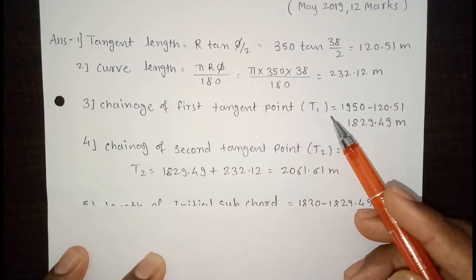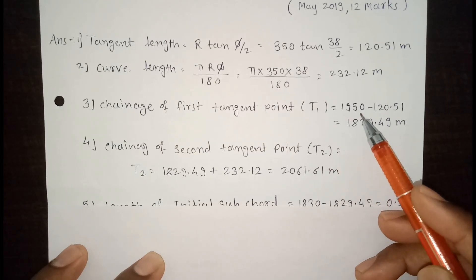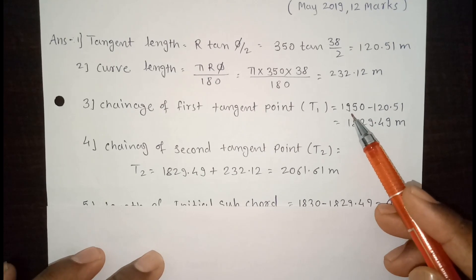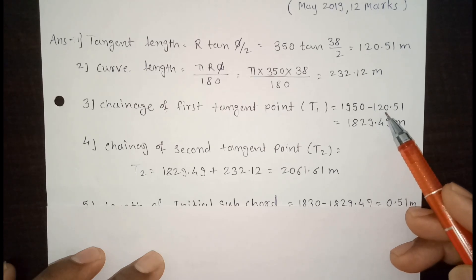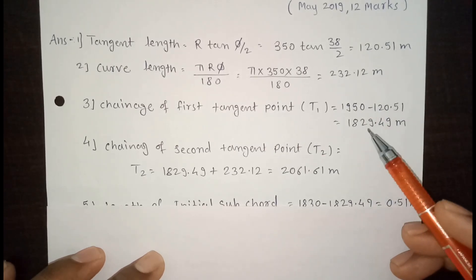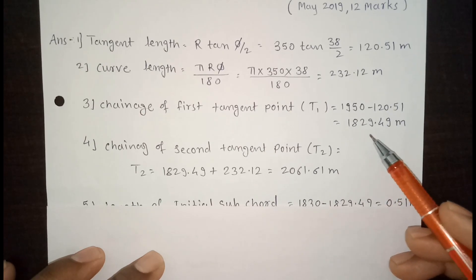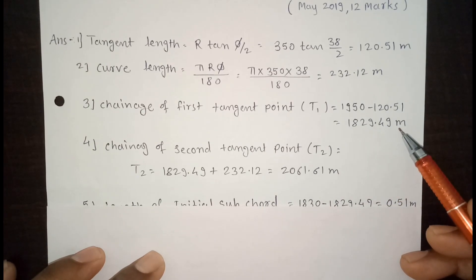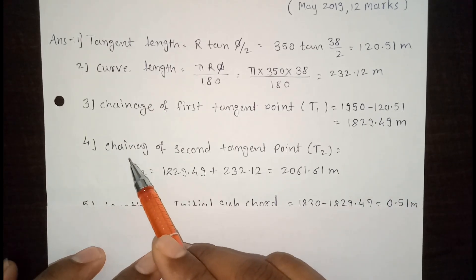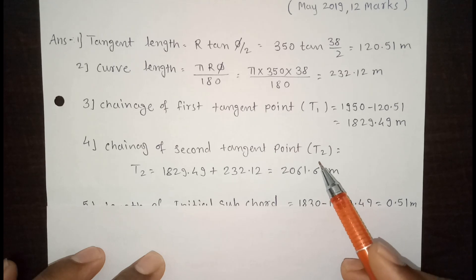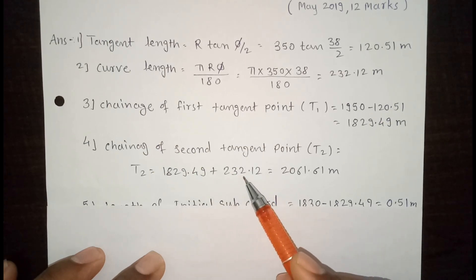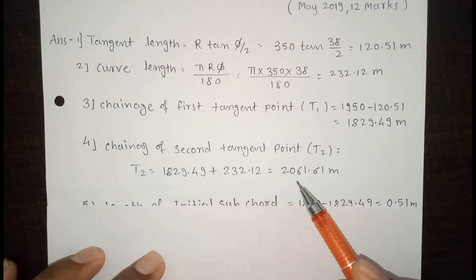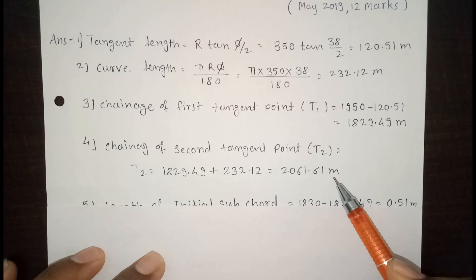The third step is the chainage of the first tangent point T1. T1 equals intersection chainage minus tangent length. The intersection chainage is 1950 minus the tangent length of 120.51, so T1 equals 1829.49 meters. For T2, the chainage of the second tangent point: T2 equals T1 plus length of curve, which is 1829.49 plus 232.12, giving 2061.61 meters.